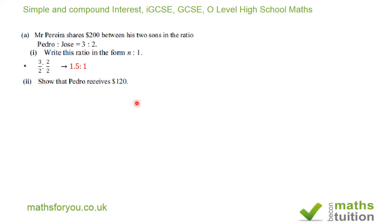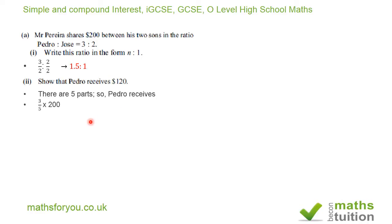Next it says show that Pedro received $120. Because Mr. Pereira shares $200 in the ratio 3 to 2, there are 5 parts. Dividing 200 by 5 gives 40, so each part is worth $40. That means Pedro gets 3 times 40, which is $120. Alternatively, you can do 3 over 5 times 200, which also gives 120.